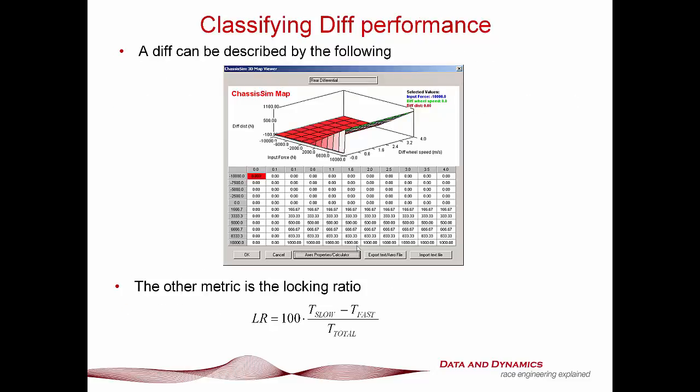Okay, so in order to be able to tune the diff, we've got to have some metrics in which to describe differential performance. So a diff mathematically can be described as the following. What we've got here is an input force and differential wheel speed. And this is the force that is split equally between the wheel that is spinning the most to the wheel that is spinning the least. That's actually very significant. The other metric that you've got to get your head around is the locking ratio of the diff, which is 100 times torque slow minus torque fast on torque total. That's actually a really important metric. That and that together is the mathematical language of a differential.